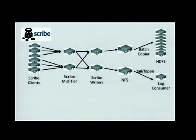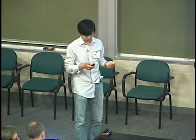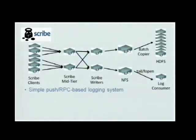The third step is very simple: the writers write the data to NFS. Eventually there are two kinds of consumers: one is batch copy and loaders, which copies data to Hadoop; and the other is near-real-time applications using Unix tail and f-open — very simple — to open the data. This is a simple push RPC-based logging system where every piece of data gets pushed into the next step.